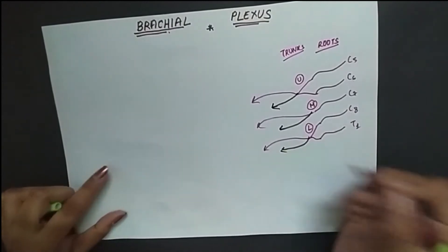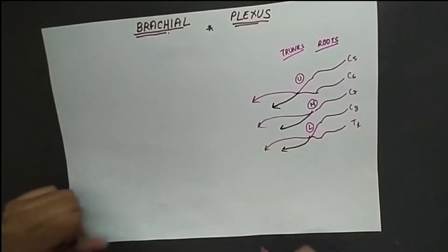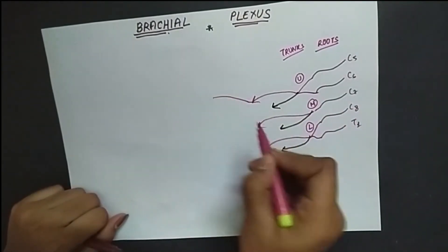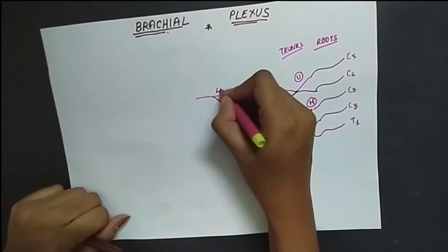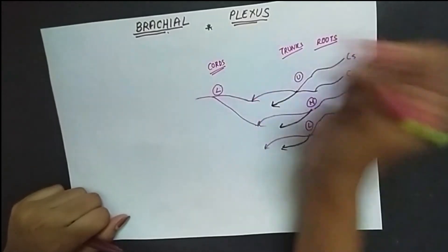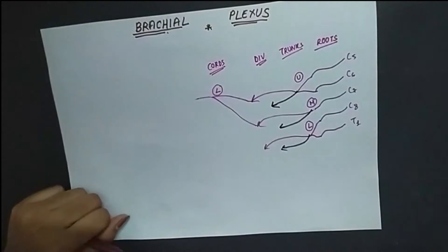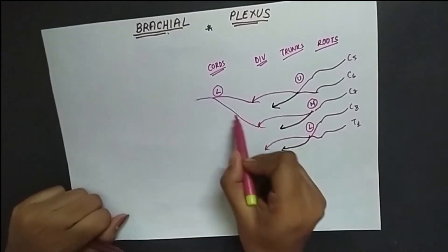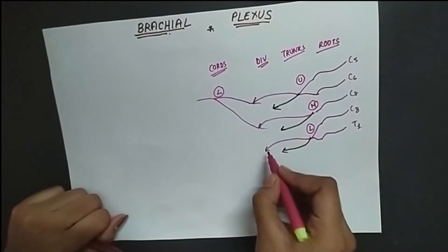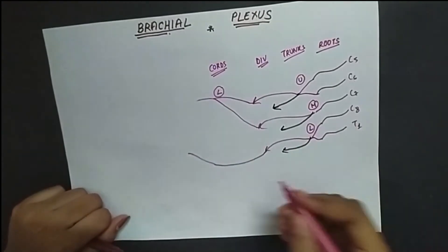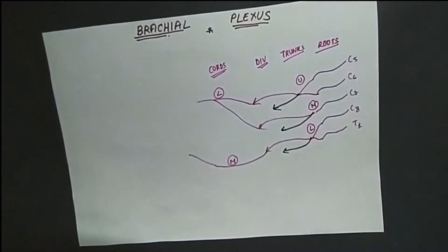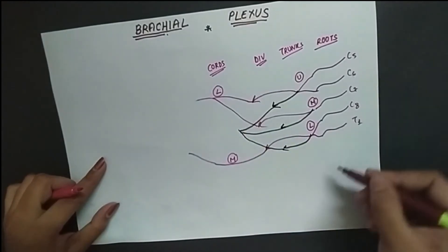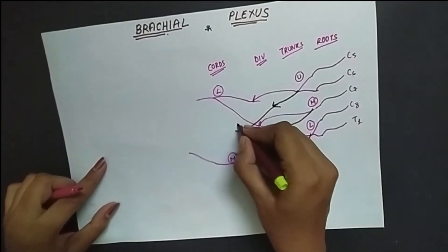Now we have the cords. The anterior division of the upper trunk and the anterior division of the middle trunk join together and form the lateral cord. The anterior division of the lower trunk forms the medial cord. All the posterior divisions from all three trunks come together and form the posterior cord.